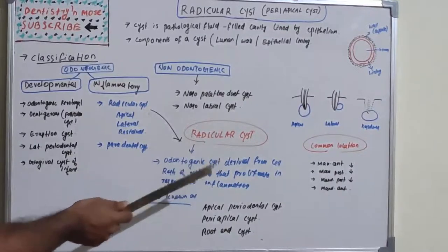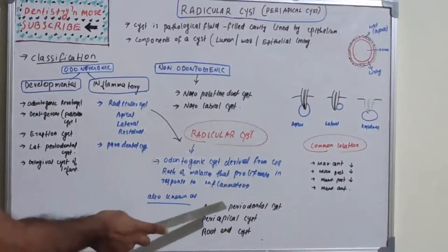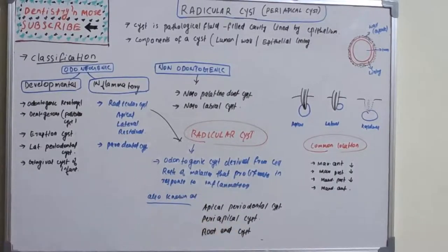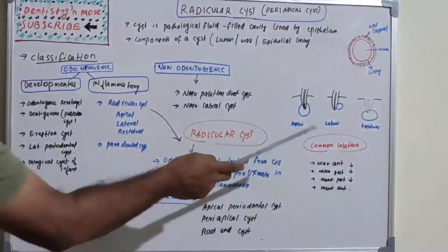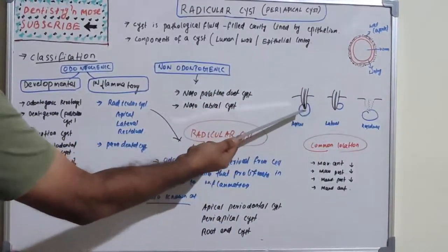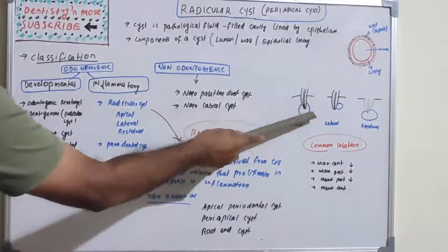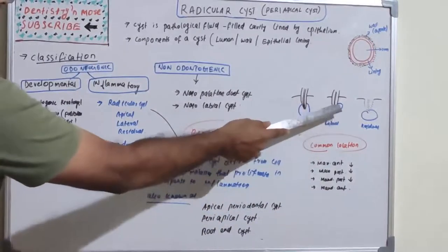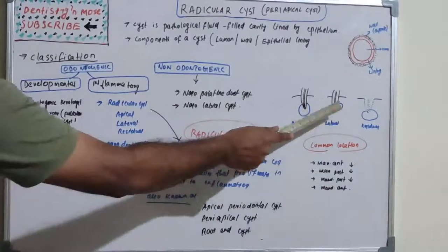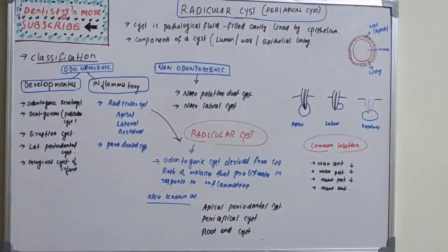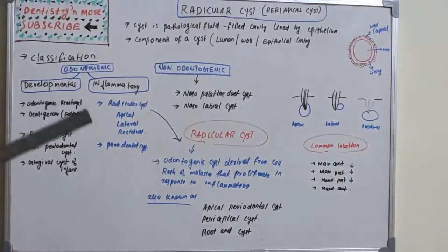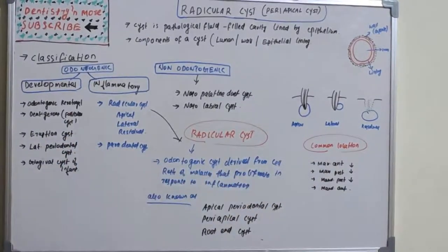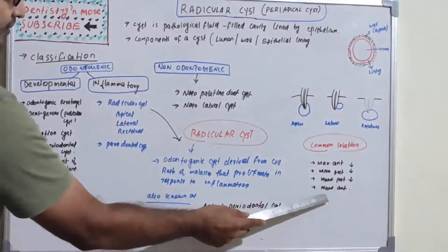Radicular cyst is also known as apical periodontal cyst, periapical cyst, or root end cyst. It has three types: apical, lateral, and residual. Apical and lateral are based on the position of the cyst relative to the root — apical circumscribes the root tip, lateral is on the side of the root. Residual cyst has no associated tooth and originates from remnants of a tooth. The most common location is the maxillary anterior region, followed by maxillary posterior, mandibular posterior, and mandibular anterior.